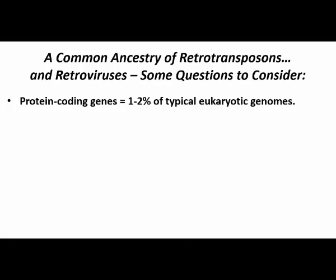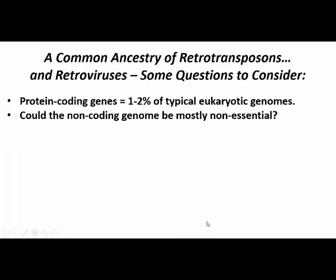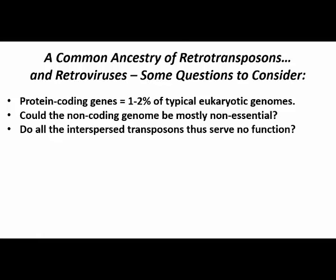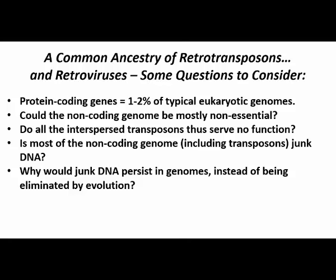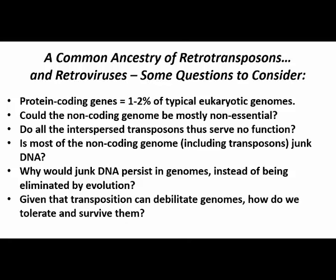Let's turn our attention to some observations and questions that bear on transposon and genome evolution. Genes for proteins typically represent only 1 or 2% of a eukaryotic genome. So a question is, is most of the non-coding DNA in a genome non-essential to life? And if that's true, then are all those transposons also functionless? Are transposons in fact junk DNA, or worse, selfish DNA whose sole imperative is to replicate themselves? And if that's true, then why do transposons exist at all? Why hasn't natural selection gotten rid of them? Given the propensity of transposition to raise havoc in genomes, how do we tolerate them, and how do we survive them?